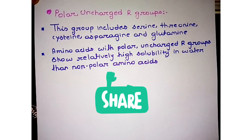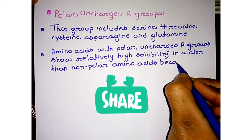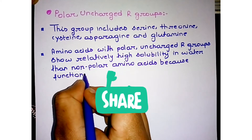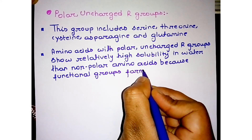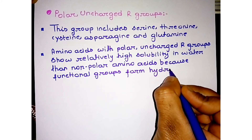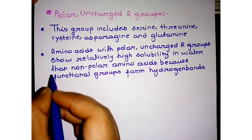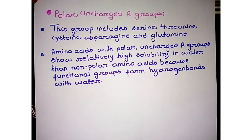Non-polar amino acids such as glycine, alanine, proline, valine, leucine, isoleucine, methionine, phenylalanine, tyrosine, and tryptophan — that is, amino acids belonging to non-polar aliphatic R groups or aromatic R groups — have lower solubility in water because their functional groups cannot form hydrogen bonds with water. Hydrogen bond is a type of weak bond, whereas covalent bond is a strong bond. We also find hydrogen bonds in nucleic acids.